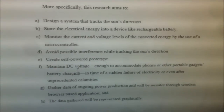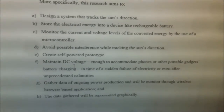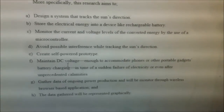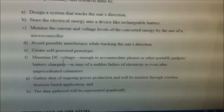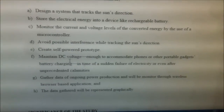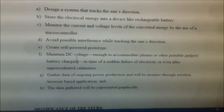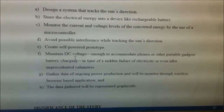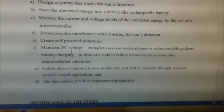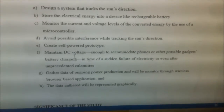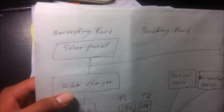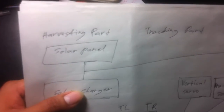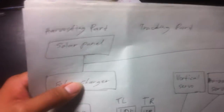Our objectives are: design a system that tracks the sun's direction, store electrical energy into a device like a rechargeable battery, monitor the current and voltage levels of converted energy by the use of a microcontroller, avoid possible interference while tracking the sun's direction, create a self-powered prototype, maintain DC voltage, gather data of ongoing power production, and monitor it through a wireless browser-based application where data will be represented graphically.